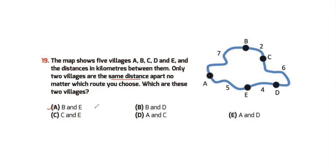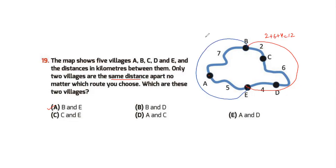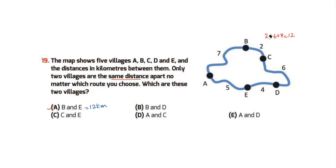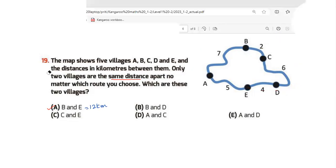If we go from B to E one way, the distance is 2 plus 6 plus 4, which gives 12. Going from B to E the other way, you get 7 plus 5, which is also 12. So whether you go from the right or the left, you still get the same distance of 12 kilometers.